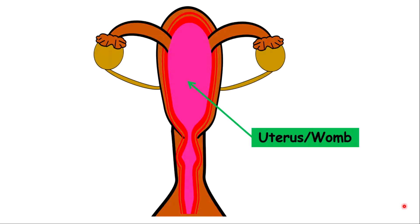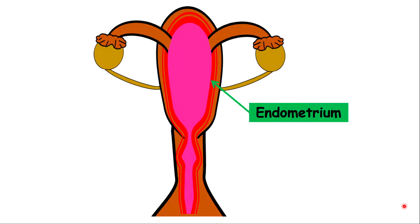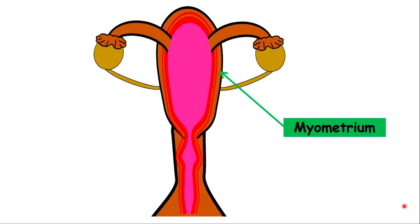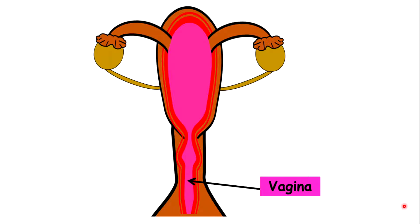And in the uterus, we have some walls. Two of them include the endometrium, which is the inner wall, and we have the myometrium, which is the middle wall. We have the cervix and the vagina.